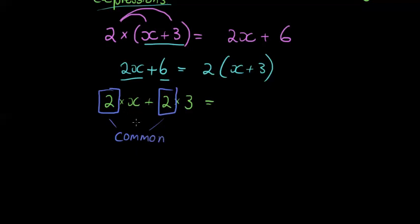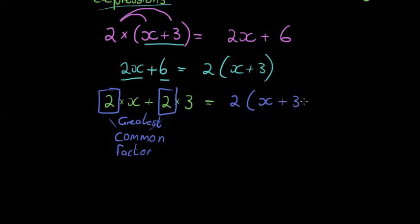Since both terms have a 2, we call it the common factor — it is a factor that's common in both terms. The whole idea is to find the greatest common factor: all factors common in every term. Here it's just a 2. We then do the opposite of distribution — we 'take out' the 2, leaving (x + 3). You'll always notice the same number of terms remains inside the bracket.